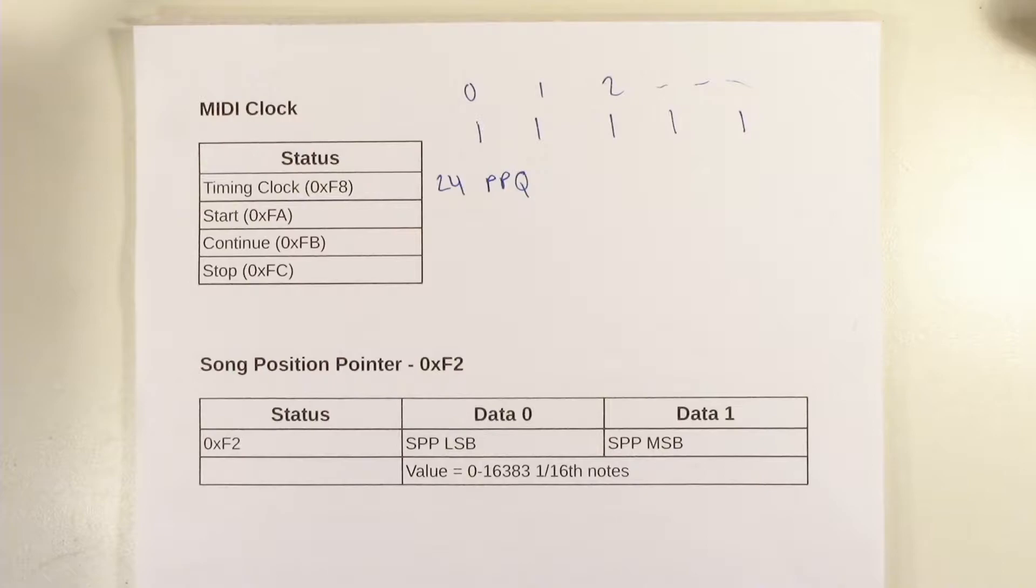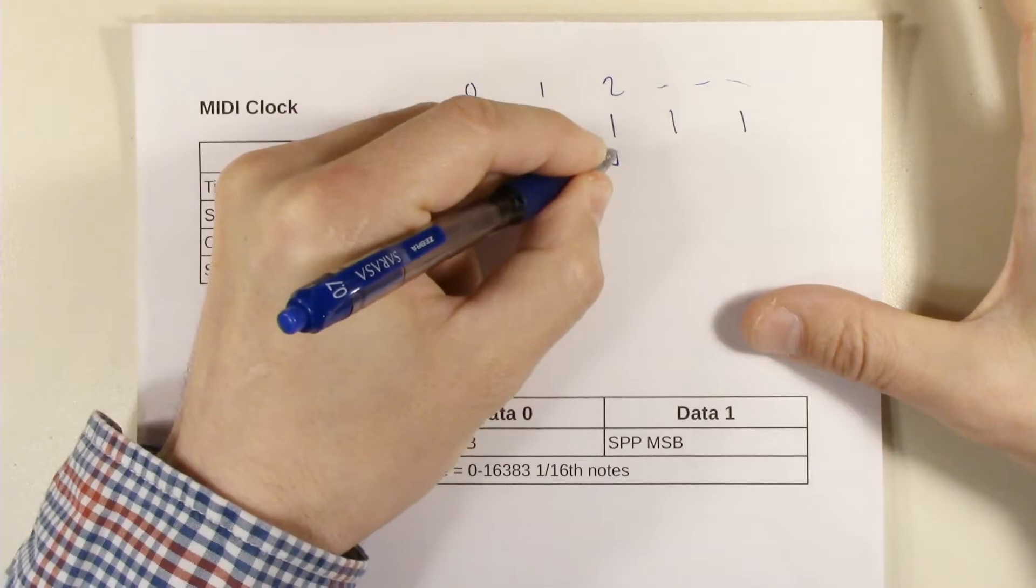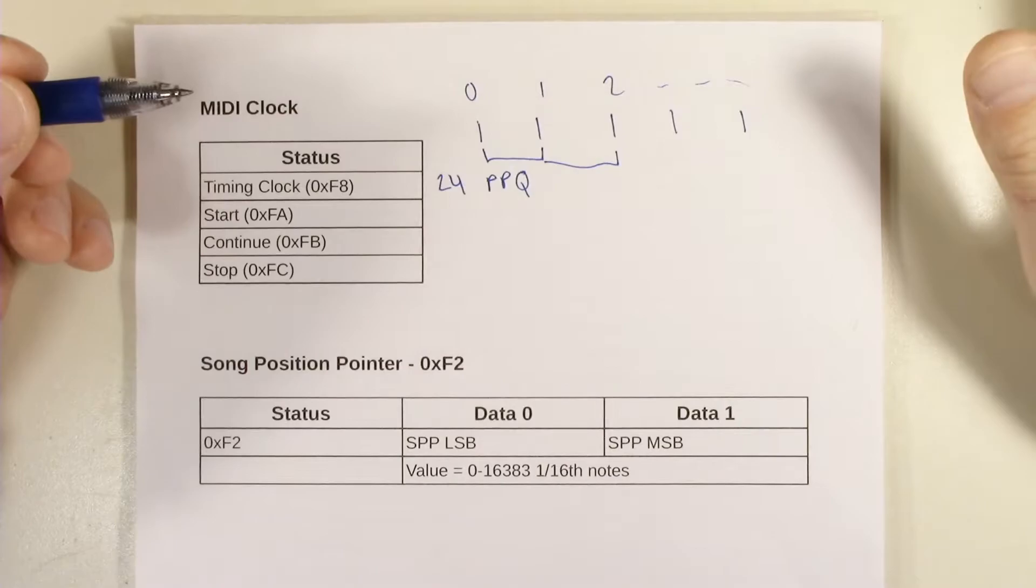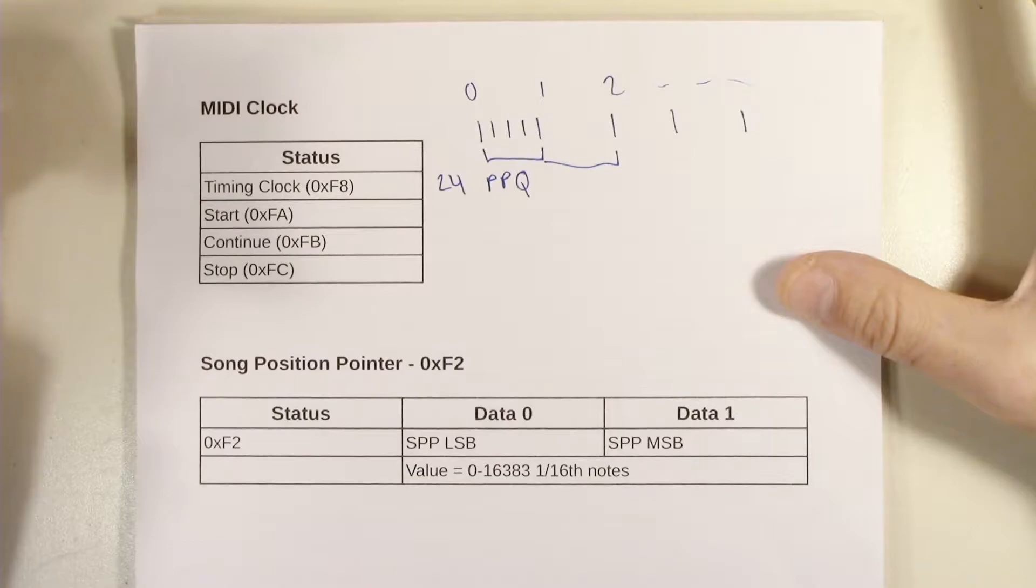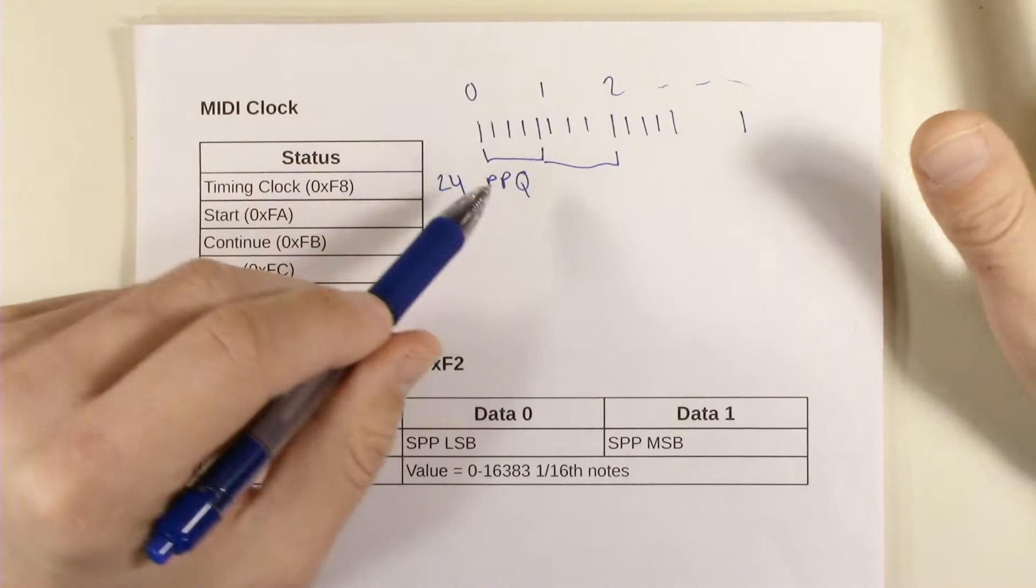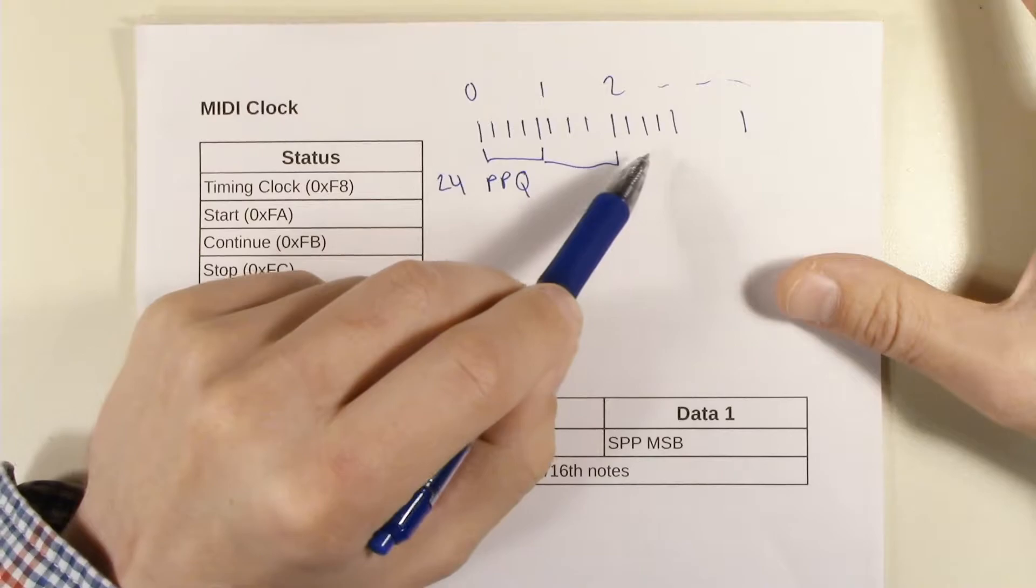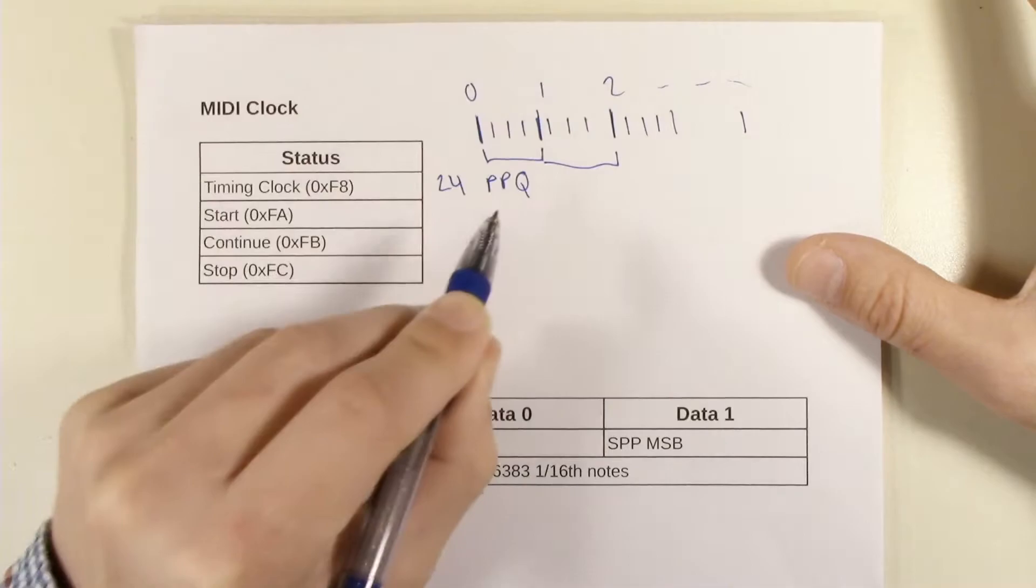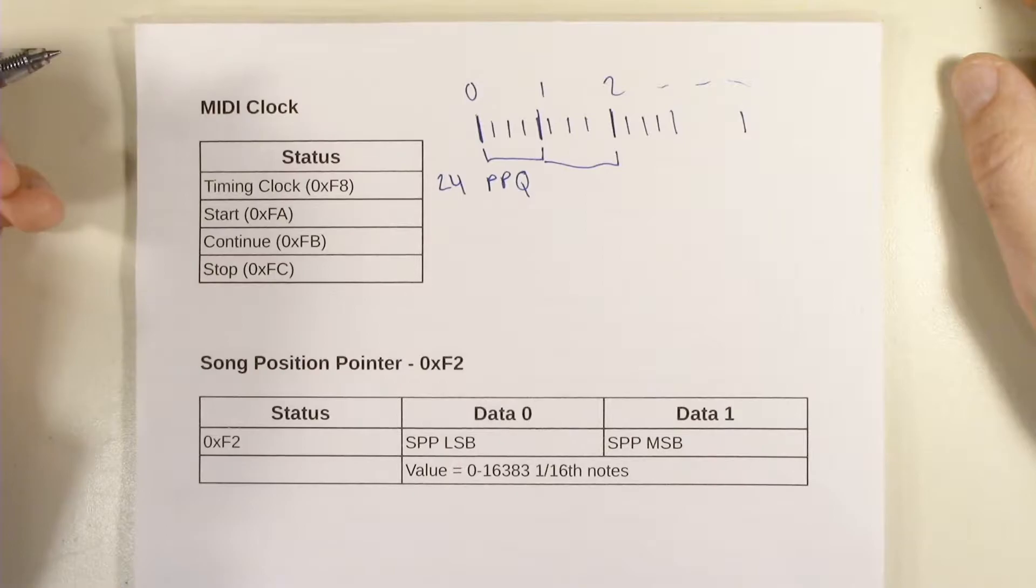So normally the 24 PPQ is the rate that's sent and then it's the job of the receiving side if it needs more resolution to measure the time between these pulses, let's call them pulses because they're just a single event, and its job is to fill in, let's say it wants to be running at 96 PPQ, it needs to fill in the missing events. And that's a bit of a challenge because it needs to be able to measure accurately the period of these main pulses and then it needs to be able to interpolate in between to the other pulses and there's a little bit of a catch to this.